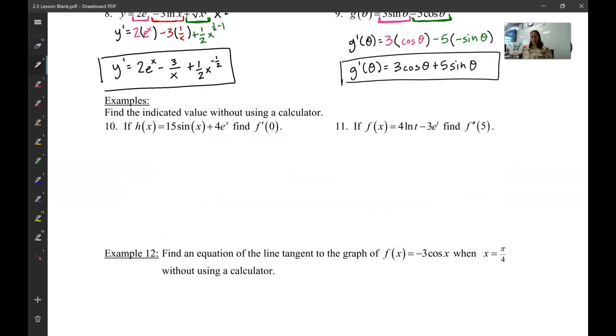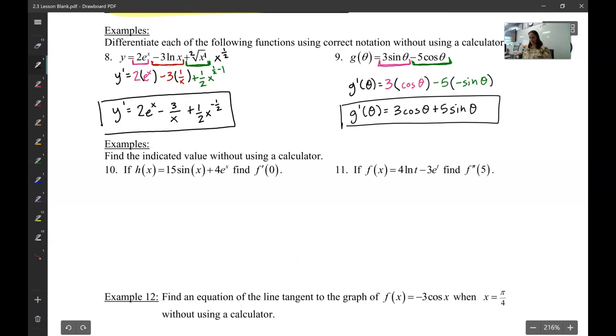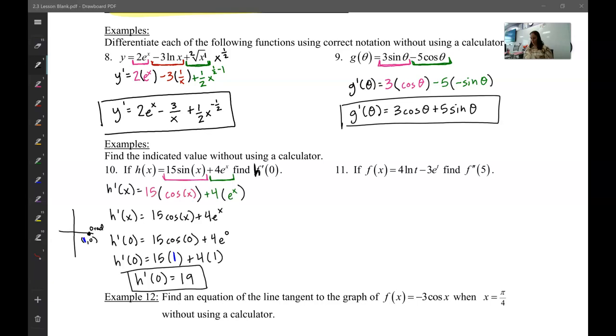And number 10, I want you to try this one on your own as well. So you're going to find the derivative of this using just like we did up here. And then plug 0 into the derivative. So pause the video and try number 10. This is what you should have gotten. Take the derivative. So 15, leave it out. Derivative of sine. Plus 4, leave it out. Derivative of e to the x. Simplify.